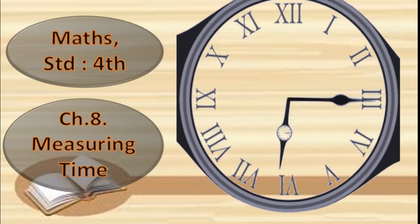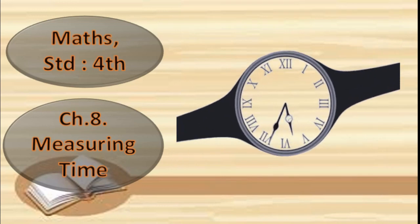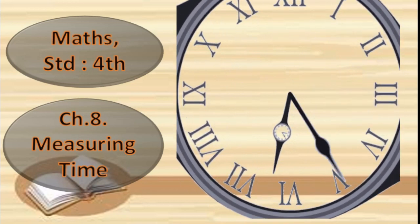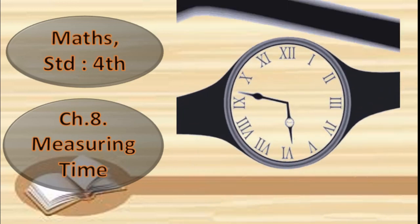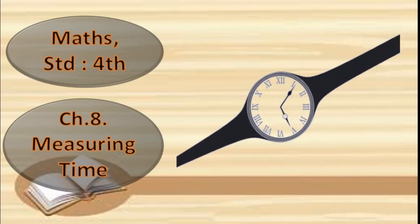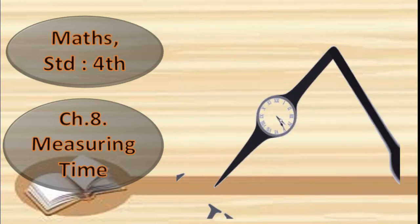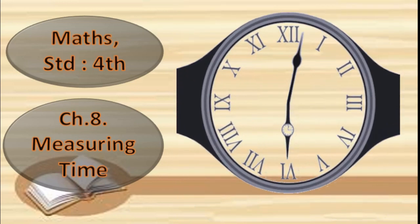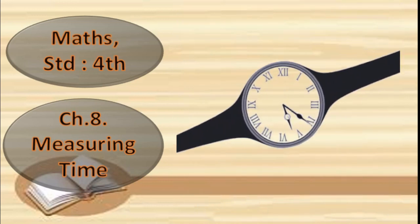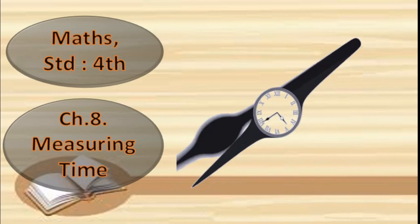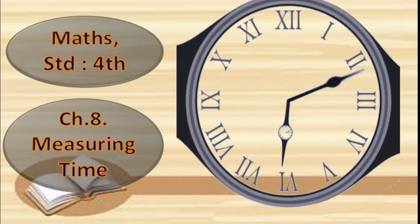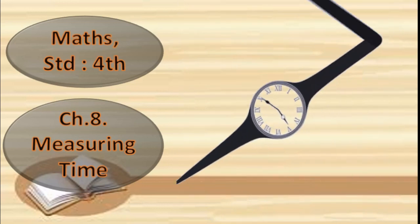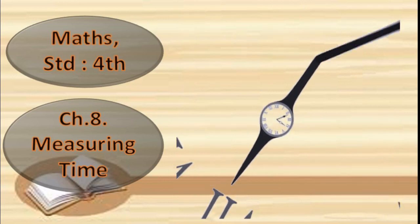For example, school time, class time, lunch time, dinner time, play time, etc. In school also, we run on timetable. If you reach school late one day, then the teacher asks why are you late today. And if you reach home late, then your mother asks why are you late. The overall meaning is that we must follow the time and there is no choice.